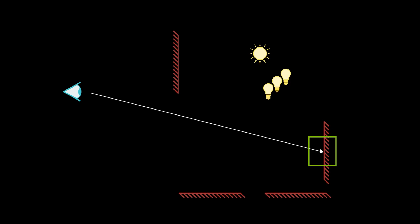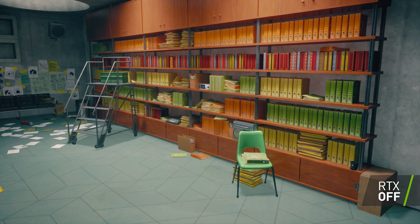If those indirect rays terminate before they hit another object, we're going to use pre-computed global illumination values. However, if those indirect rays intersect with another object or surface, we're going to use that to compute our diffuse indirect term.